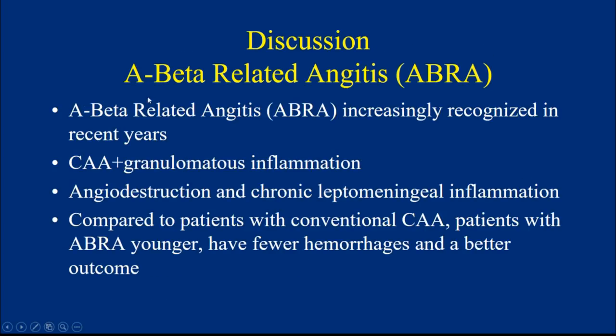ABRA has been increasingly recognized in recent years. It is the combination of cerebral amyloid angiopathy with granulomatous inflammation, chronic leptomeningeal inflammation, and vascular destruction. Compared to patients with conventional cerebral amyloid angiopathy, ABRA patients tend to be younger, have fewer hemorrhages, and have a better outcome.